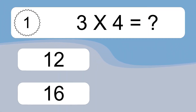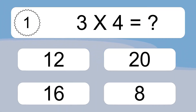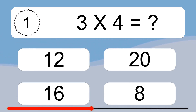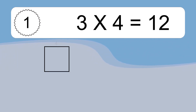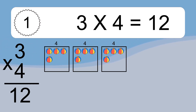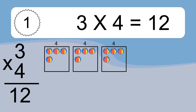3 times 4 equals what? 3 times 4 equals 12. We have 3 boxes, and each box has 4 colorful balls inside. If you count all the balls in all the boxes together, you will have 3 times 4 balls. This equals 12 balls.